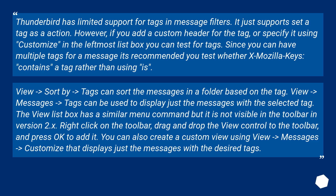Under View > Sort By > Tags, you can sort the messages in a folder based on the tag. Under View > Messages > Tags, you can display just the messages with the selected tag. The view list box has a similar menu command but it is not visible on the toolbar in version 2.x. Right-click on the toolbar, drag and drop the view control to the toolbar, and press OK to add it. You can also create a custom view using View > Messages > Customize that displays just the messages with the desired tags.